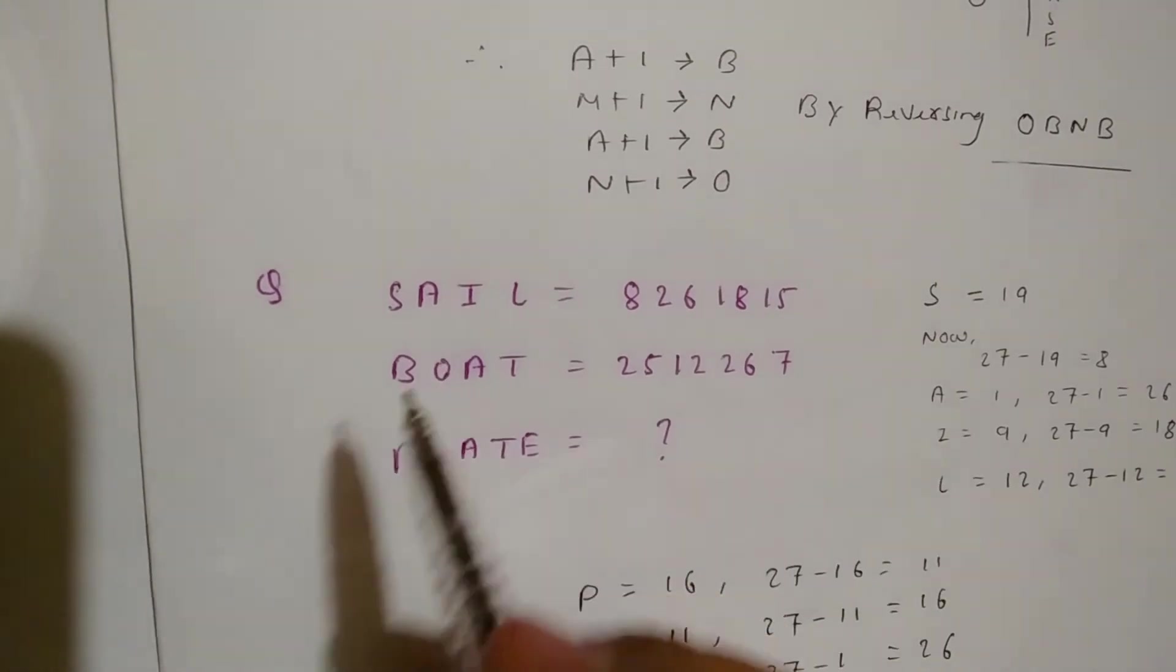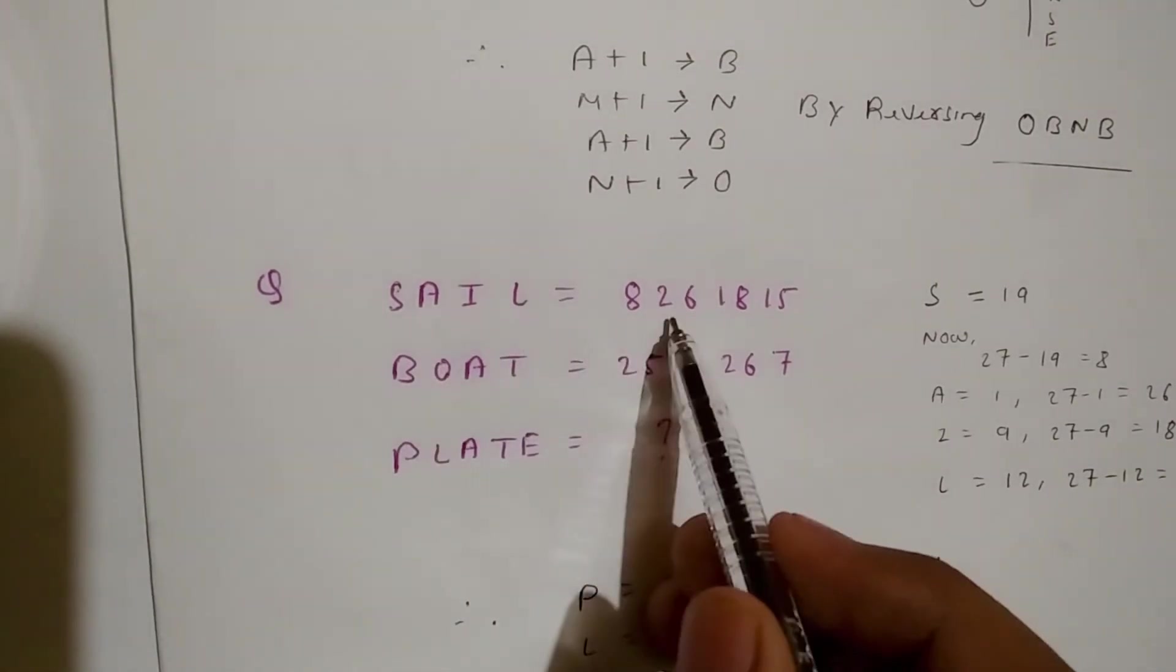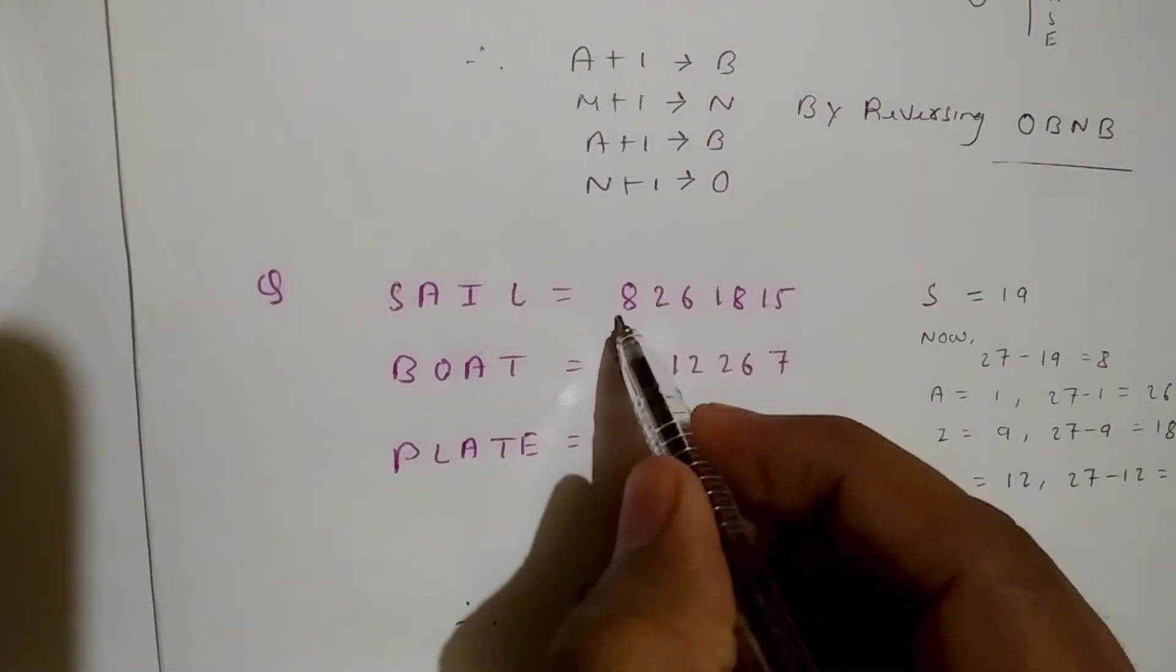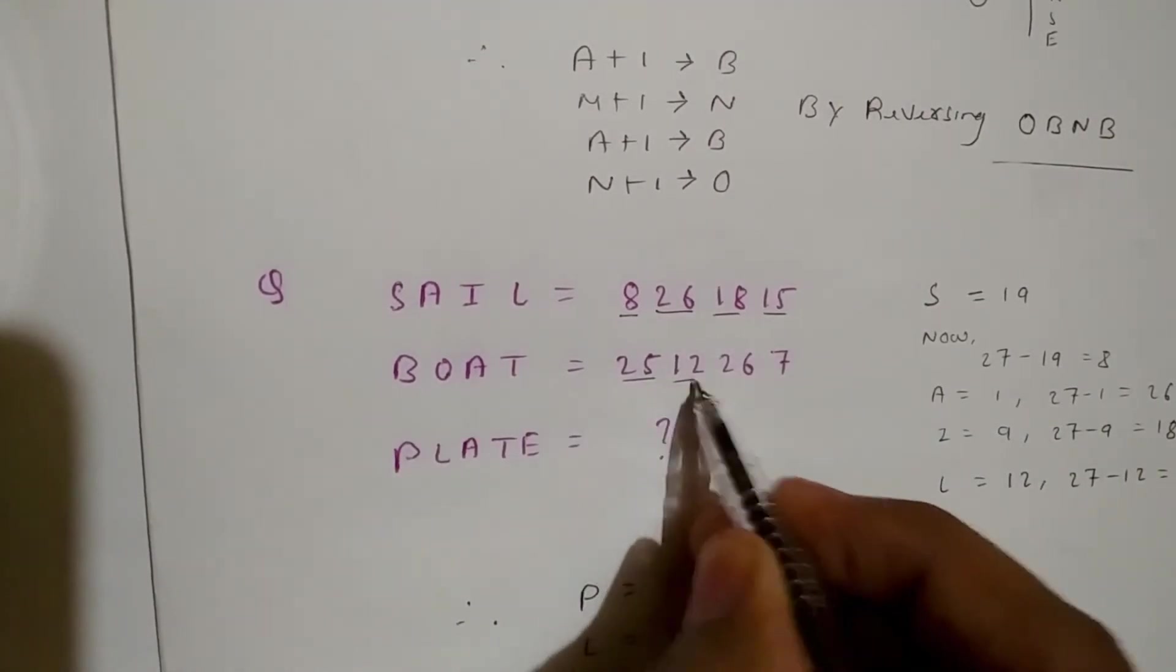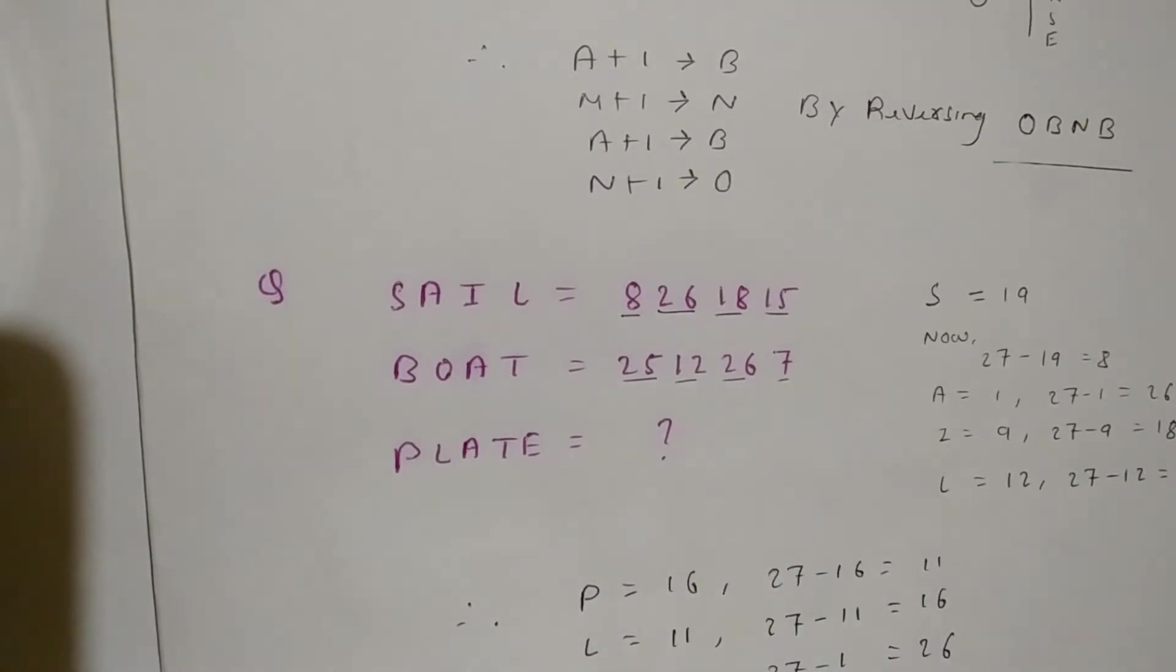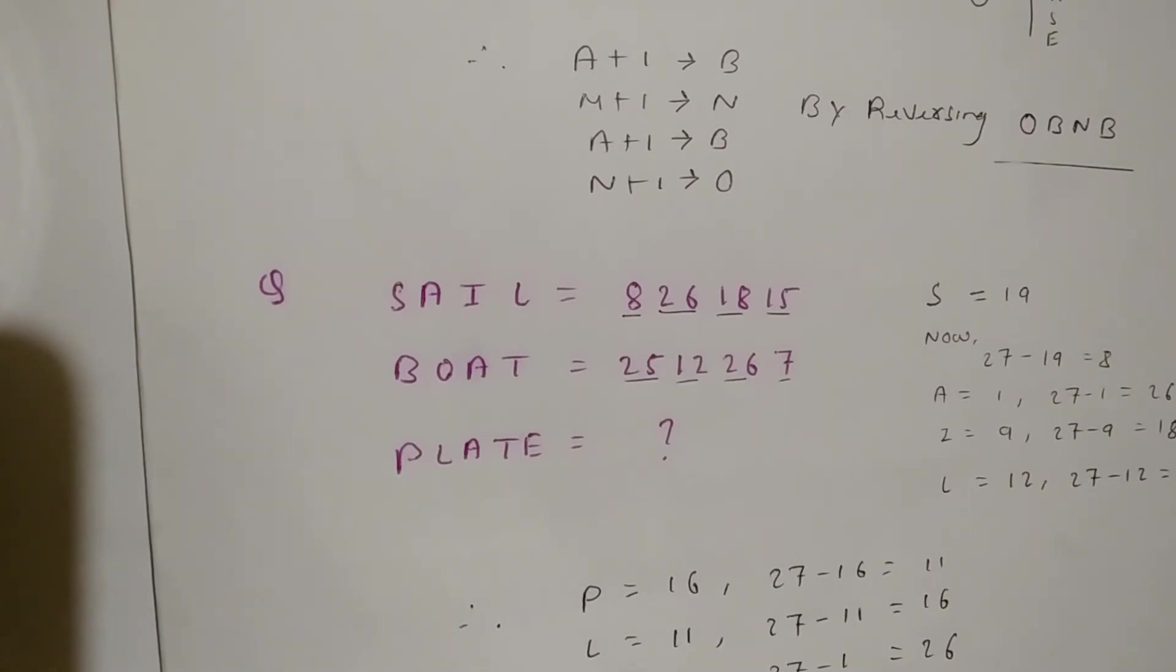Suppose SAIL equals 8, 26, 18, 15, and BOAT equals 25, 12, 26. Then PLATE equals what? You can do it by yourself. If you can't, then see my video.